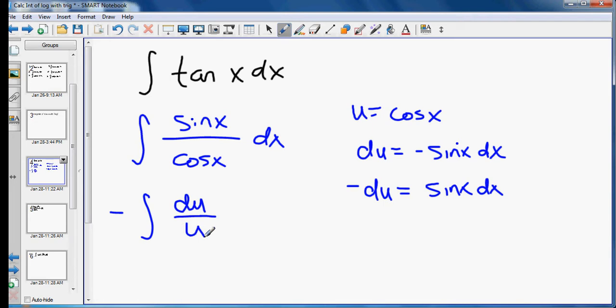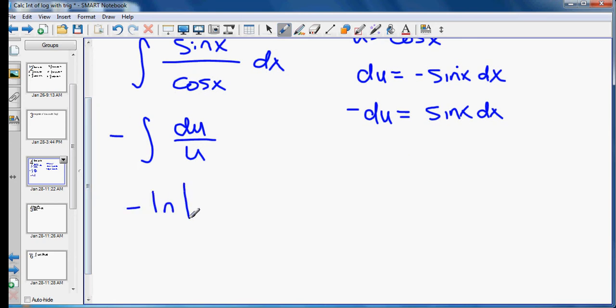And we know the integral of du over u is the natural log of the absolute value of u plus c. And that gives us the negative natural log of the absolute value of cosine x plus c.